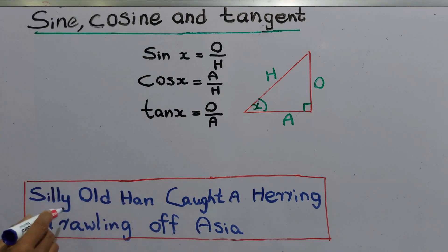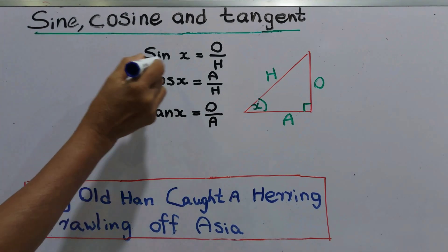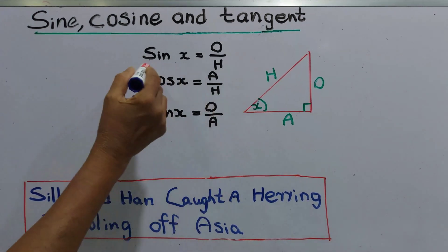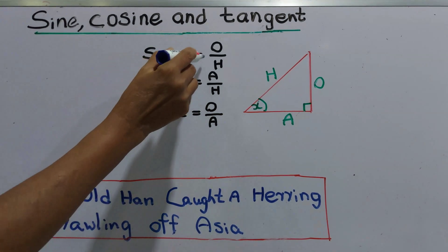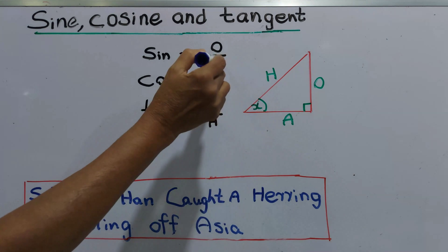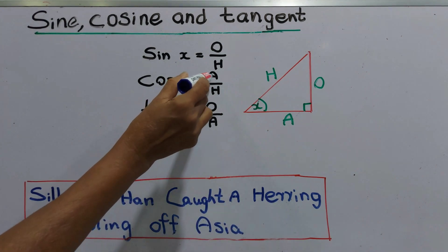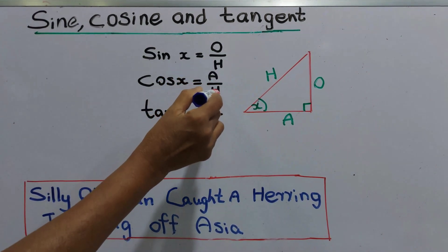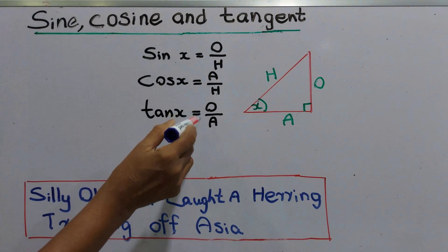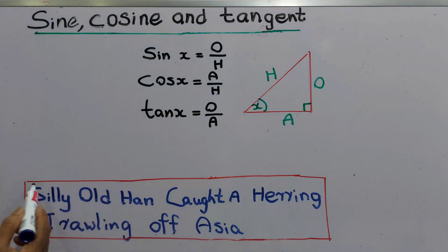We apply this simple sentence to the functions. Silly Old Hand: sine x equals opposite over hypotenuse. Caught A Hearing: cos x equals adjacent over hypotenuse. Trolling Of Fascia: tan x equals opposite over adjacent. This simple sentence makes it easy to remember — just take the first letter of each word.